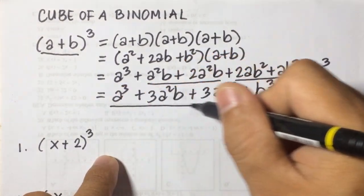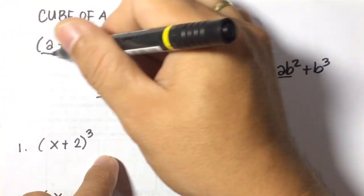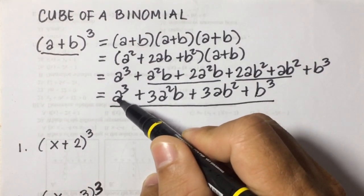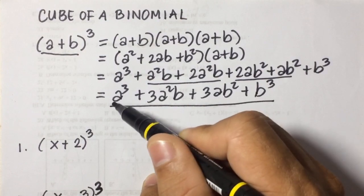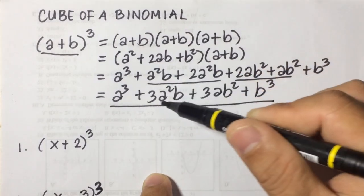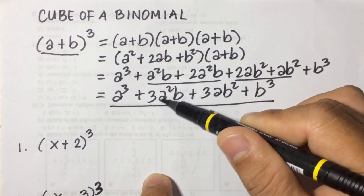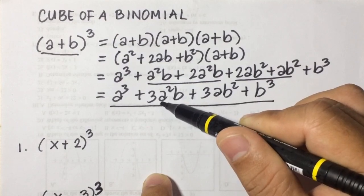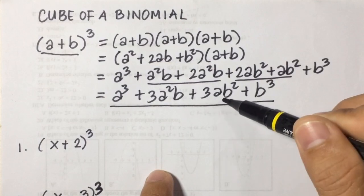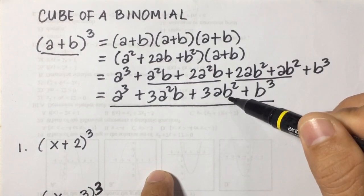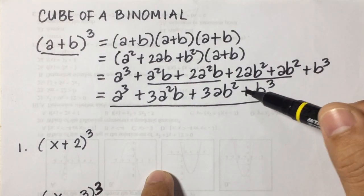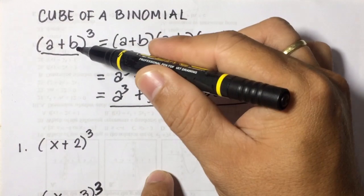Now we're going to use this result as a rule for cubing a binomial. The first term of the answer is the first term of the binomial cubed. The second term is 3 times the first term squared times the second term. The third term is 3 times the first term times the second term squared. The fourth term is the cube of the second term.